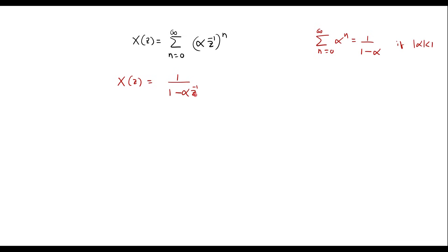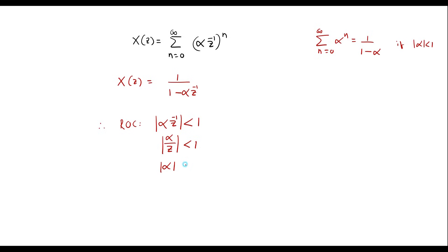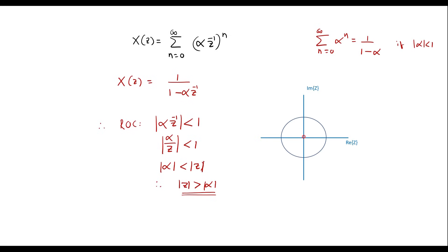Here we can observe that if we take alpha Z inverse equal to 1, then it will become 1 upon 0, which is nothing but infinity. So X of Z converges if alpha Z inverse is less than 1. Therefore, the ROC — that is, region of convergence — will be: alpha Z inverse must be less than 1, or alpha divided by Z must be less than 1, or alpha less than Z. Therefore Z must be greater than alpha. So if we take this as the radius alpha, the ROC exists outside the circle.